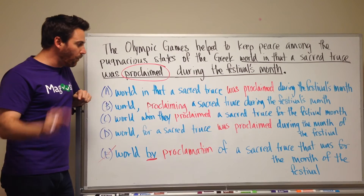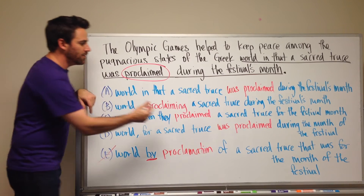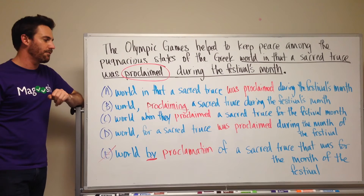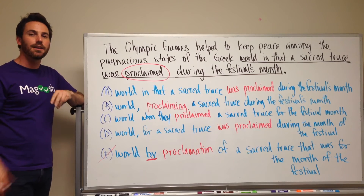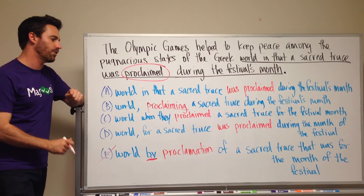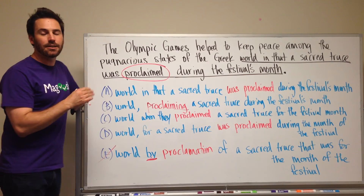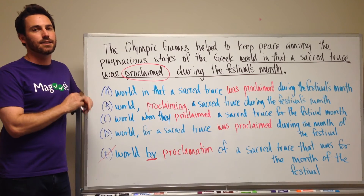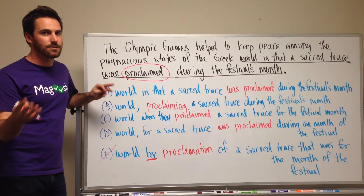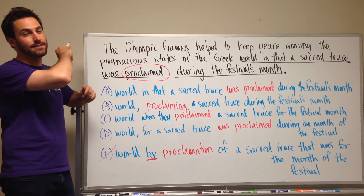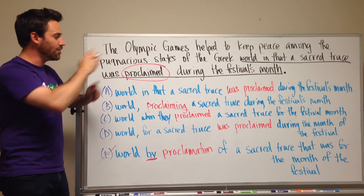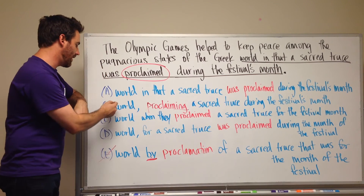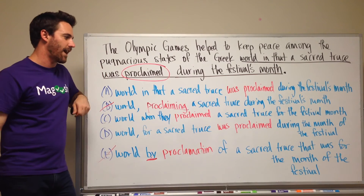We can also talk about one other small point: the GMAT does not like us to use progressive forms of the verb unless something is continuing. An -ing form of a verb has to be used when something is ongoing. In this case, we're talking about something that happened way in the past, so there's no possible way it's continuing — we can eliminate that answer choice as well.